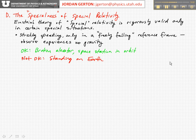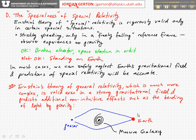A person standing on Earth, in most situations we'll be interested in, it's a good approximation to safely neglect the Earth's gravitational field, and special relativity will be relatively accurate. Einstein's theory of general relativity, which is much more complex and we will not be discussing in this class — maybe we'll have just a hint of it in several weeks — is valid even in strong gravitational fields, and it predicts additional non-intuitive effects beyond those predicted by special relativity.